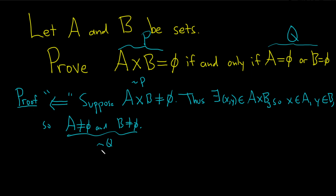So that shows that q implies p, which shows this direction here. That takes care of the first case. We used what's called proof by contrapositive: you assume p is not true and you show q is not true. The negation of the statement 'A equals empty or B equals empty' is 'A not empty and B not empty' — that's De Morgan's rule from logic.